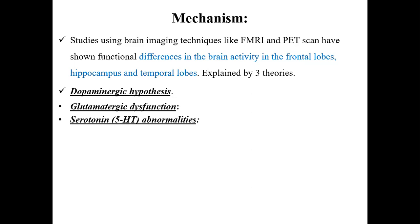The second theory is glutamatergic dysfunction. A deficiency of glutamatergic activity produces symptoms similar to those of dopaminergic hyperactivity and possibly the symptoms seen in Schizophrenia. According to the third theory — serotonin or 5-HT abnormalities — schizophrenic patients with abnormal brain scans have higher blood 5-HT concentrations, and this concentration correlates with increased ventricular size, suggesting there is a higher amount of serotonin in the blood.